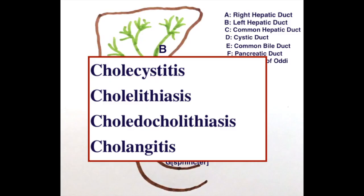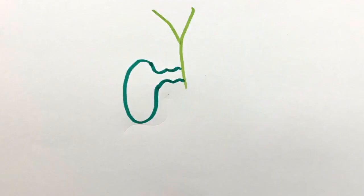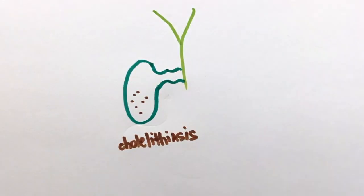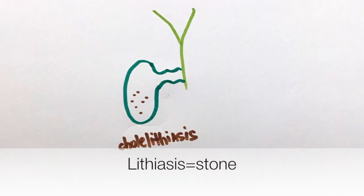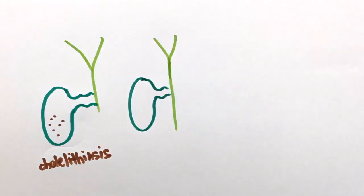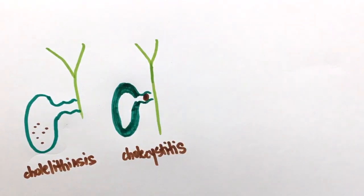The biliary system can have different kinds of pathologies. When there are gallstones in the gallbladder, it's known as cholelithiasis. Lithiasis stands for stones. When the gallstone is at this point, it can potentially obstruct the flow of bile from the gallbladder. Whenever something is stagnant proximal to an obstruction, there is a high chance of developing inflammation. So, this results in cholecystitis which is the inflammation of the gallbladder.